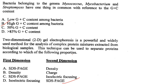Bacteria belonging to the genera Myxococcus, Mycobacterium and Streptomyces have one thing in common: they have high G+C content among bacteria. Answer is option B.